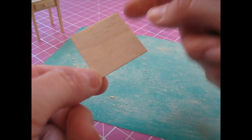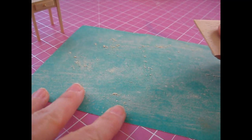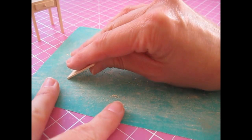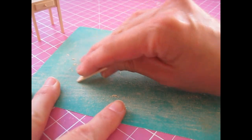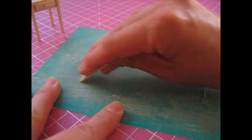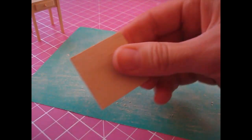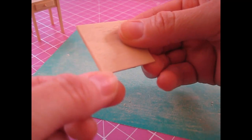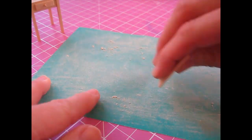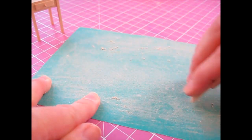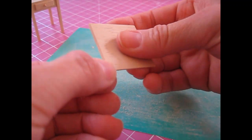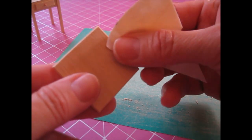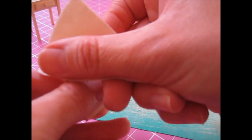We're now going to bevel each edge of the top piece. With your sandpaper flat on your work surface, hold the piece at a 45 degree angle and sweep it towards you, keeping it at that angle. Do that until you've got a nice sharp bevel on each edge. You can then just tidy that piece up in your hand using fine grade sandpaper.